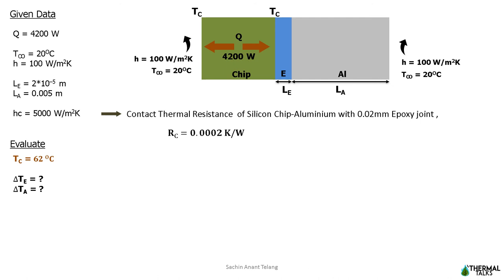As we have calculated the contact resistance at epoxy joint, the next is thermal resistance in aluminum sheet. So RAL equals length of the sheet divided by thermal conductivity of aluminum into the surface area. Aluminum is a very good conductor of heat. Hence the thermal resistance offered by 5 mm thick aluminum sheet is very small.